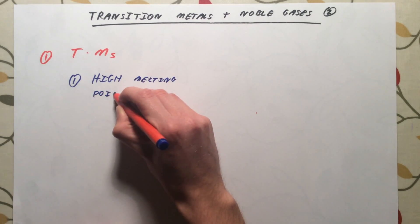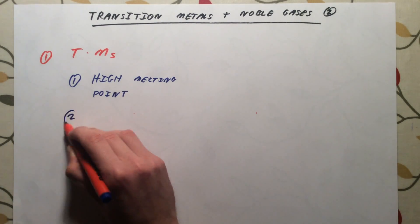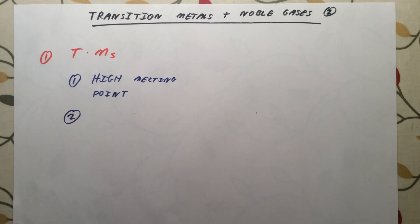For example, iron has an extremely high melting point. You need to get it to around 1,000 degrees to melt it. The second property that you need to know about for your exam is actually to do with some of the compounds they form. And transition metals generally form really nice, brightly coloured compounds.